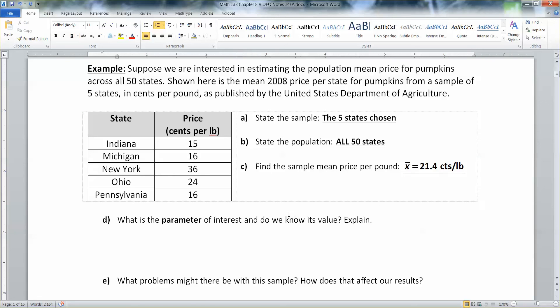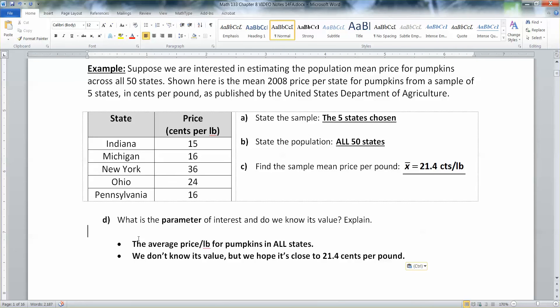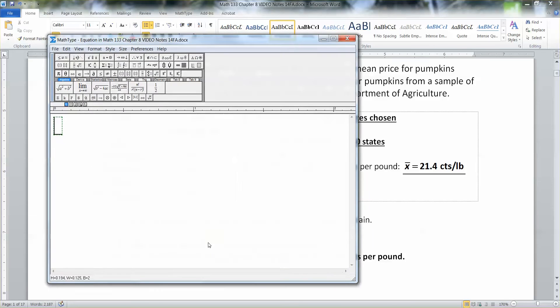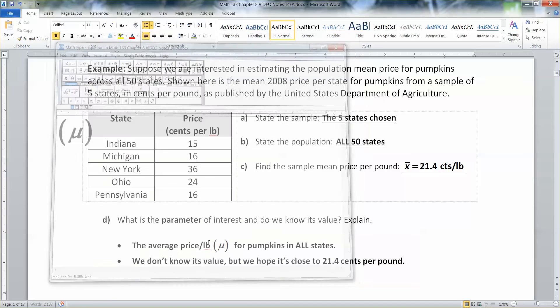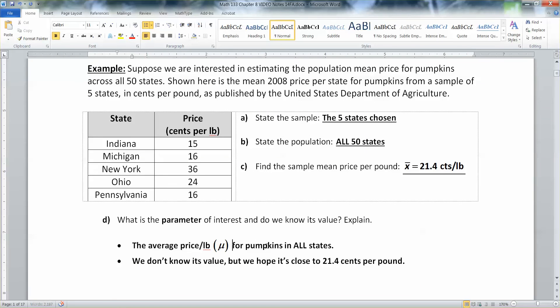Now what is the parameter of interest? And do we know its value? Well, the parameter would be the average price per pound in all 50 states. And keep in mind, that's a mu. Average price per pound. That's a mu value.